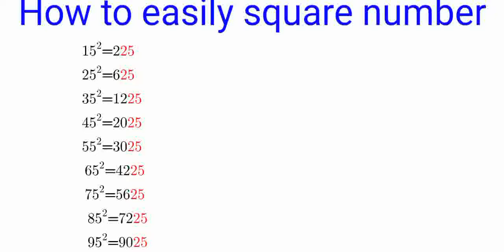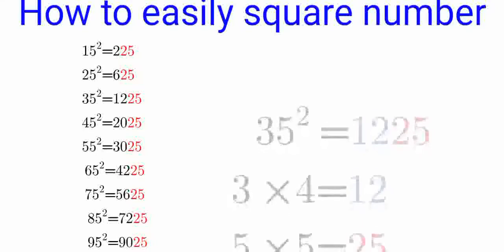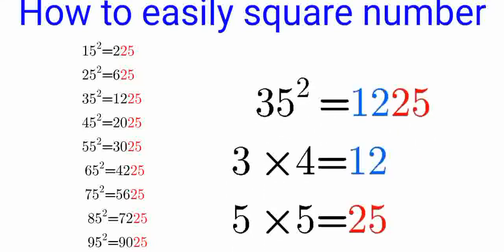Let's look at the square of 35. We know it ends in 25. How does it begin? To figure out the beginning, take the first digit of the number, which is 3. Multiply it by the next highest digit, which is 4. Three times four is 12, and there's the answer: 1225.